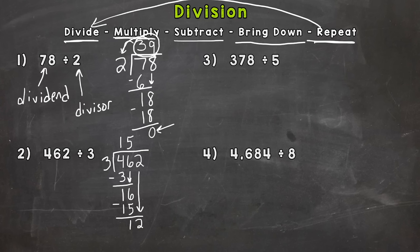And then bring down the 2. So start over. We have 12 divided by 3. How many groups of 3 can we make out of 12? And the answer to that is 4. So now we come back around. 4 times 3 is 12.